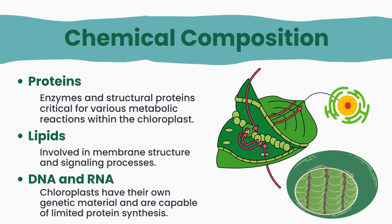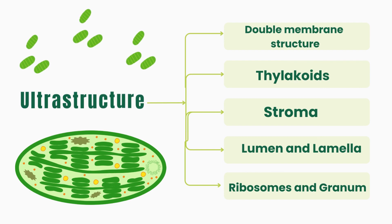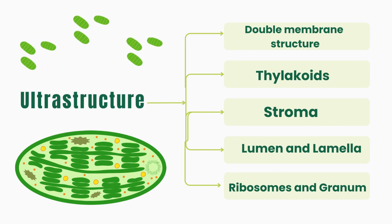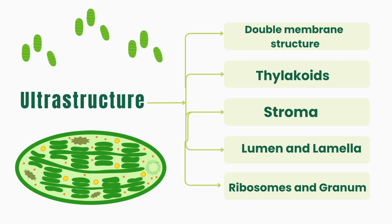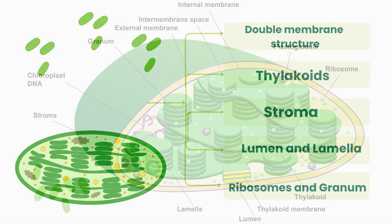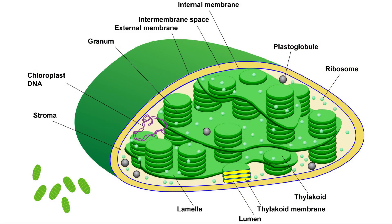The ultrastructure of chloroplast consists of stroma, lumen, lamella, double membrane structure, thylakoids, ribosomes, and granum. The chloroplast consists of a double membrane structure, enclosing an internal aqueous region called the stroma.